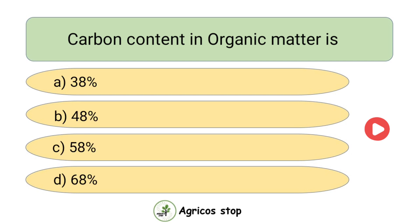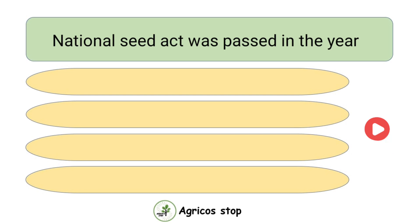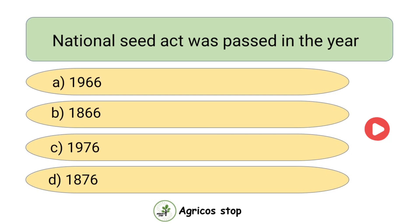Carbon content in organic matter is — options are 38%, 48%, 58%, and 68%. The answer is 58%. Carbon content in organic matter is 58%.